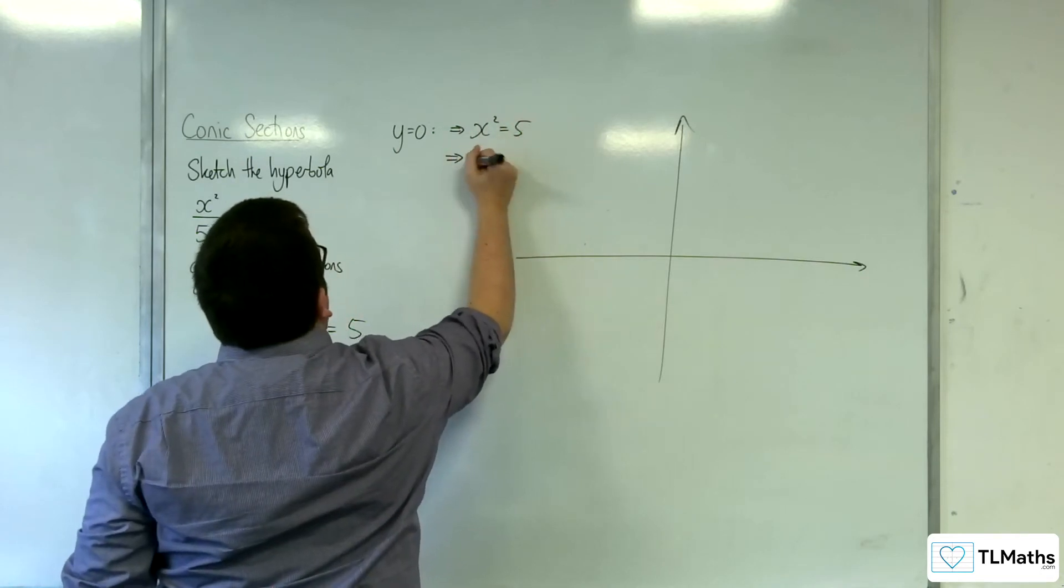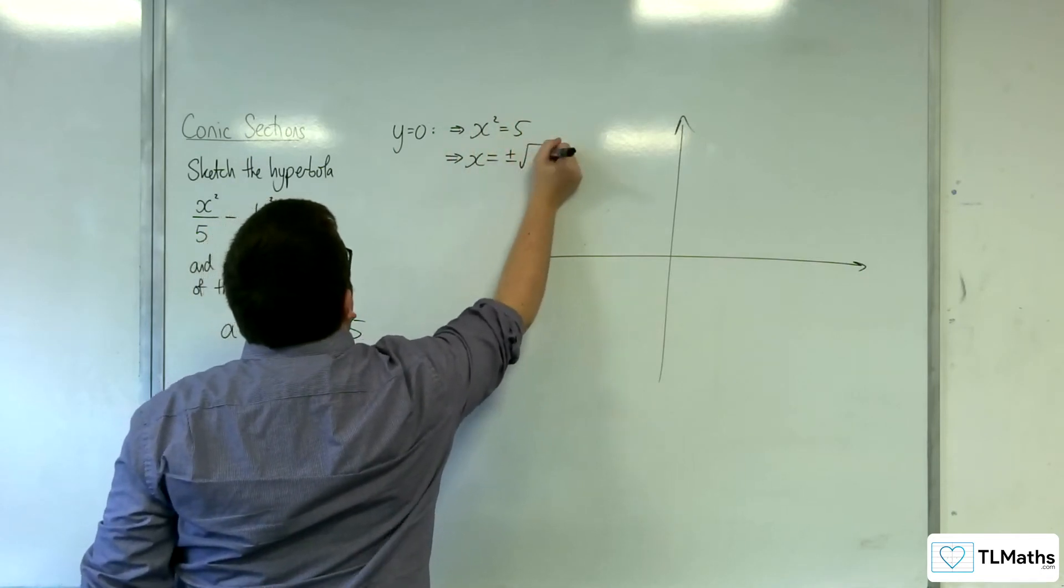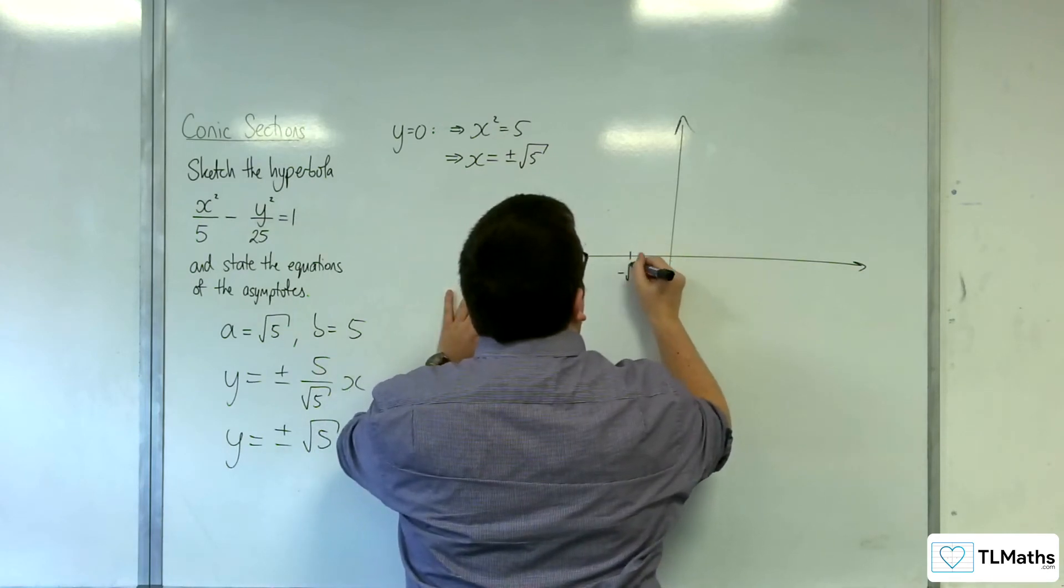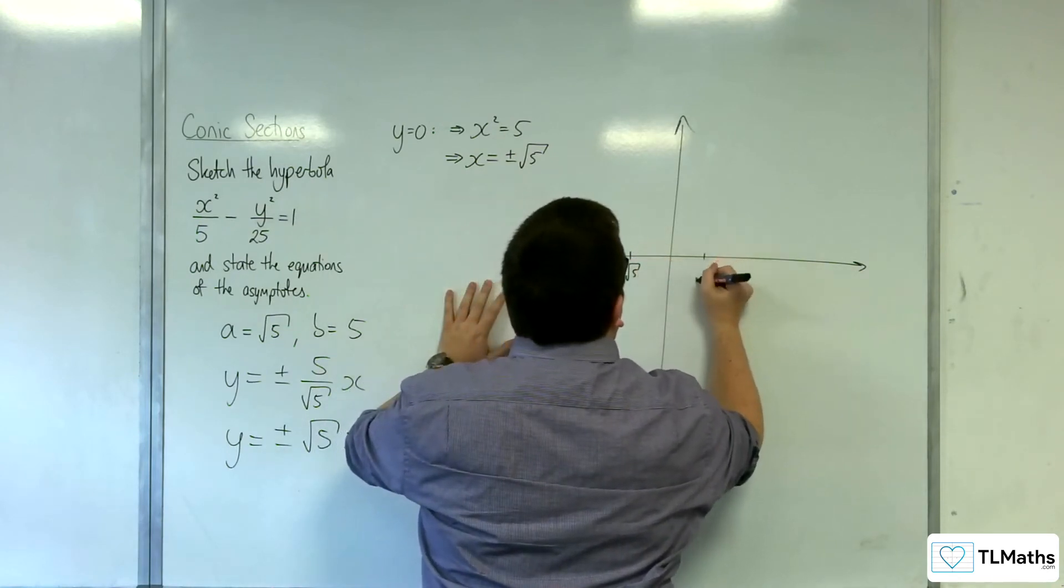And so x is going to be ±√5. So minus √5 and positive √5. Let me just move that along slightly.